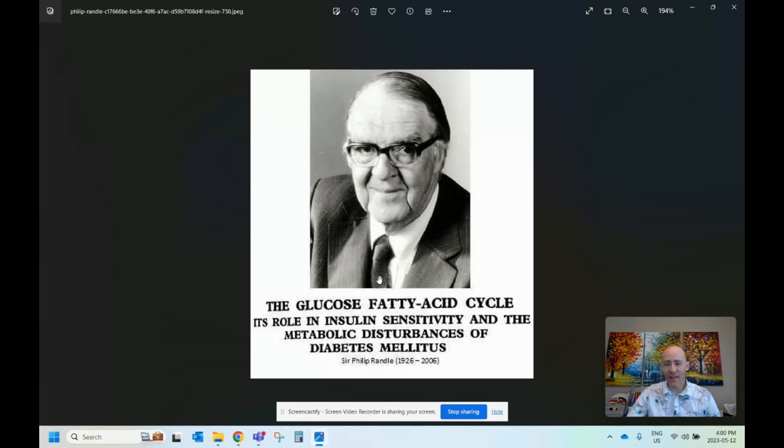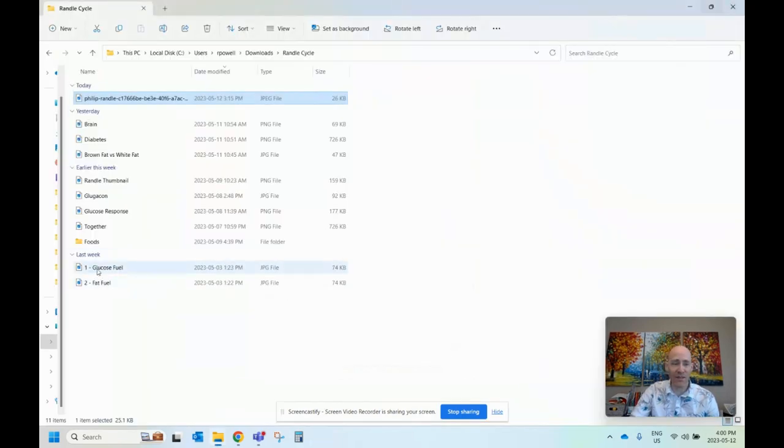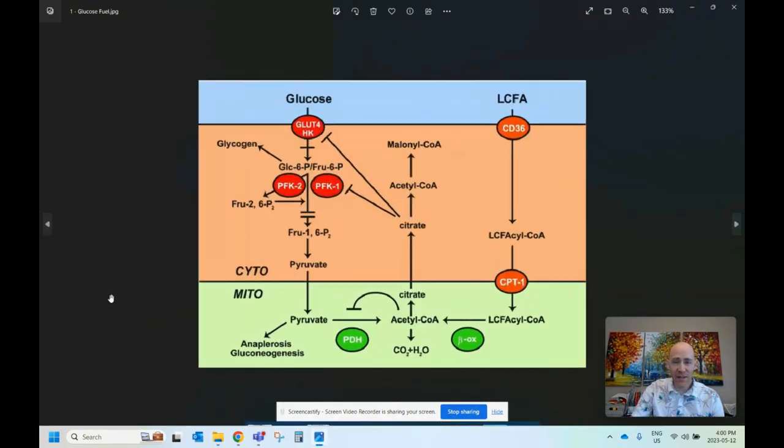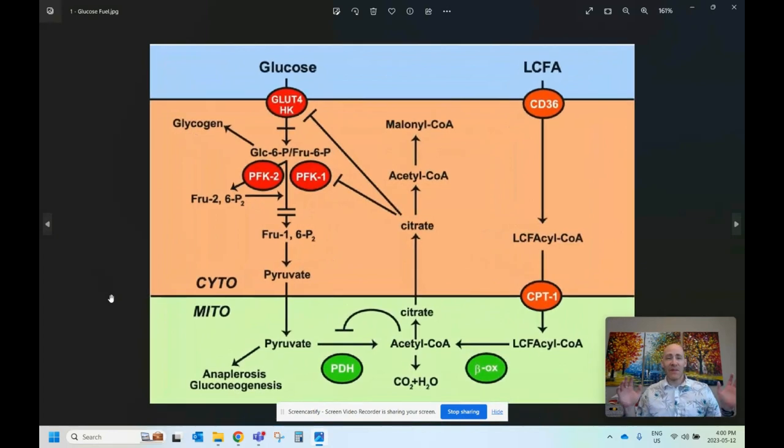From what I understand, there are two diagrams that make up the Randall Cycle. And I'll pull up the first one now. This diagram represents what's going to happen if at a moment in time, glucose is the primary energy source for a muscle cell. That's what this diagram represents.